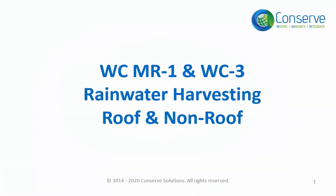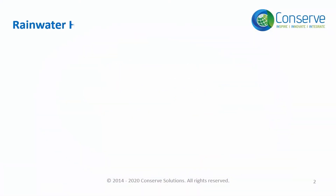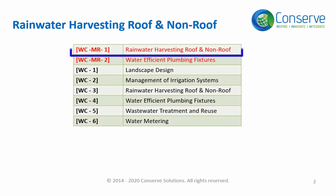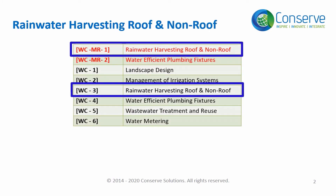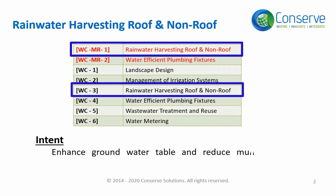Rainwater harvesting is addressed in mandatory requirement 1 and credit 3. The intent or objective of this prerequisite and credit is to enhance the groundwater table and reduce municipal water demand through effective rainwater management.